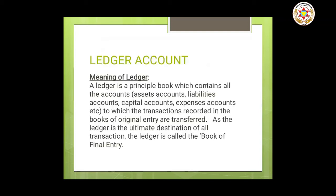Next is ledger account. A ledger contains a classified summary of all transactions recorded in the cash book and journal. A ledger is not an independent record — the transactions recorded in a ledger are derived from either the cash book or the journal.